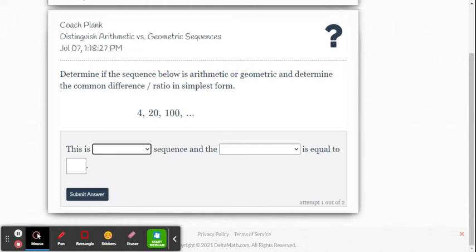Well, 20 minus 4 is 16, and 100 minus 20 is 80. So we quickly see that this is not a common difference. So now does it have a common ratio? 100 divided by 20, that's 5. 20 divided by 4 is 5. So we can see that this is a geometric sequence.